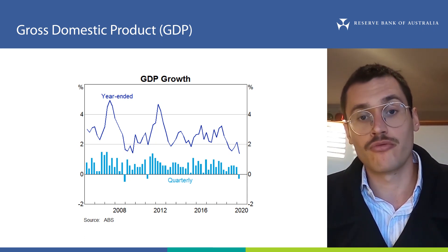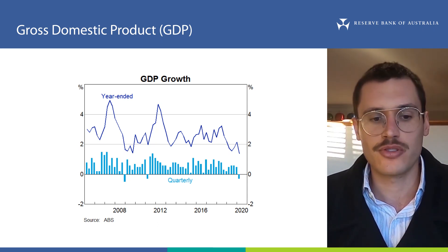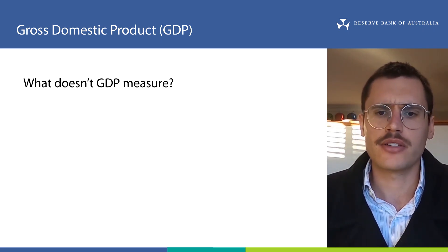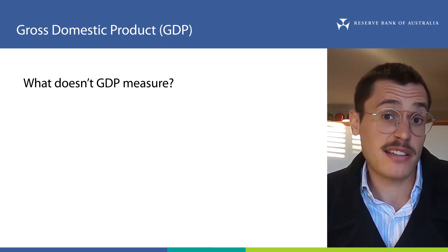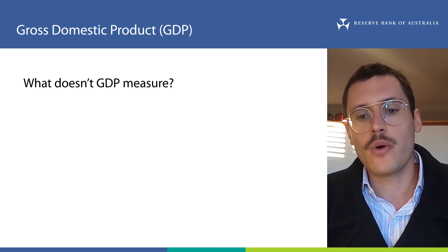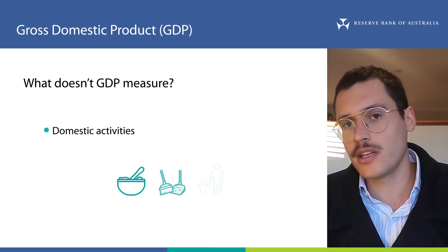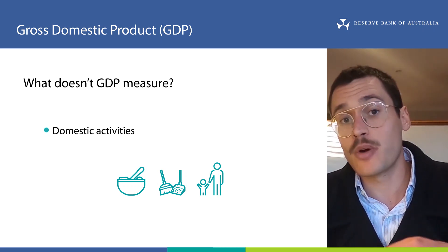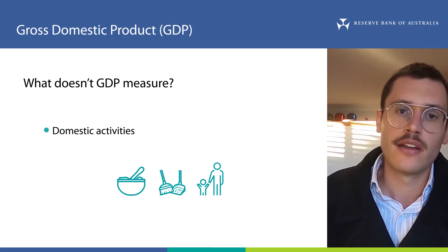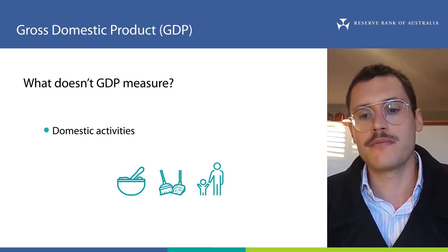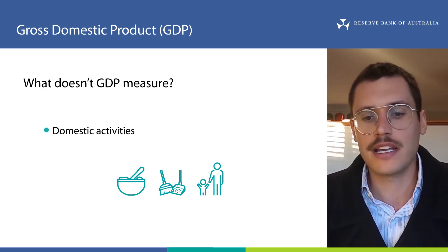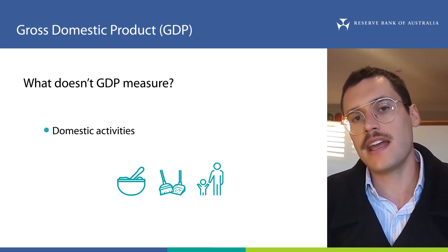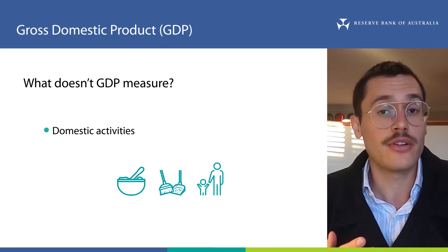There's a related video discussing what a real measure of an economic variable is, and you can find a link in the description. So far we've talked about what GDP does measure, but what about the things GDP doesn't measure? GDP doesn't measure the time we spend doing domestic activities like cooking, cleaning, or caring for children. These activities are important, and this is considered a shortcoming of GDP — because if you pay someone else to do these activities, it is included in GDP. The problem is that it's difficult to measure them, since people don't track how many hours a week they cook or clean, and it's hard to assign value to domestic work.